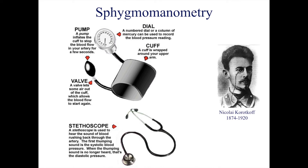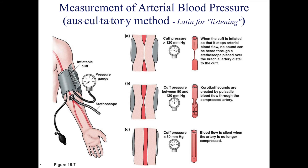The way to measure blood pressure was created by Nikolai Korotkoff and is done by using a sphygmomanometer and a stethoscope. This is done by putting the cuff around the upper arm of the individual and the stethoscope over the brachial artery distal to the cuff. When the cuff is inflated to where it stops the arterial blood flow, no sound can be heard through the stethoscope.